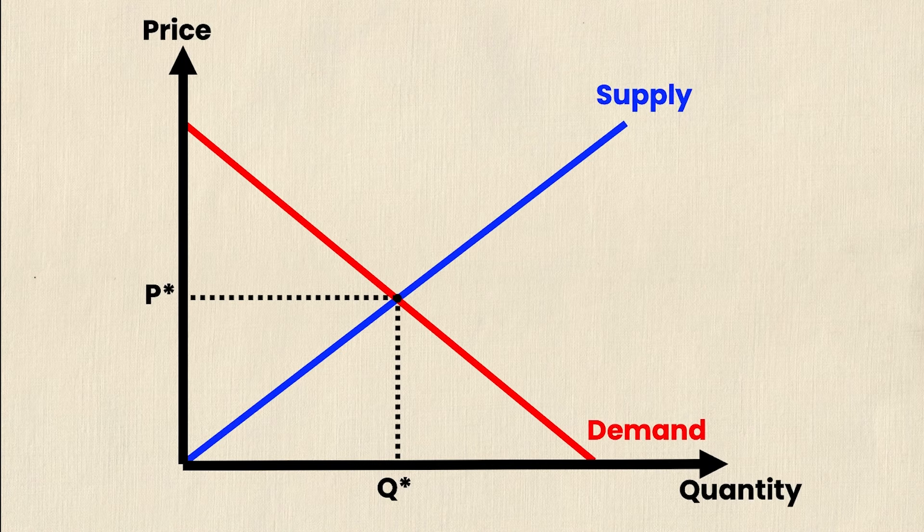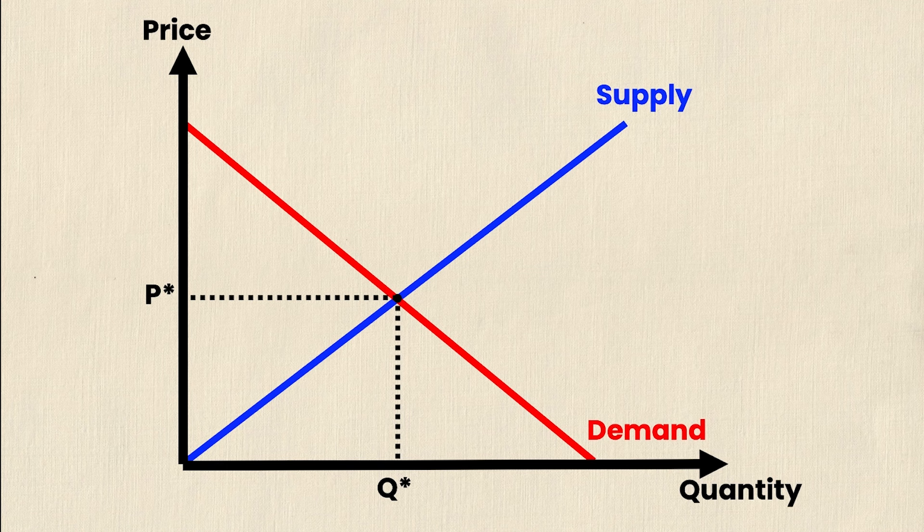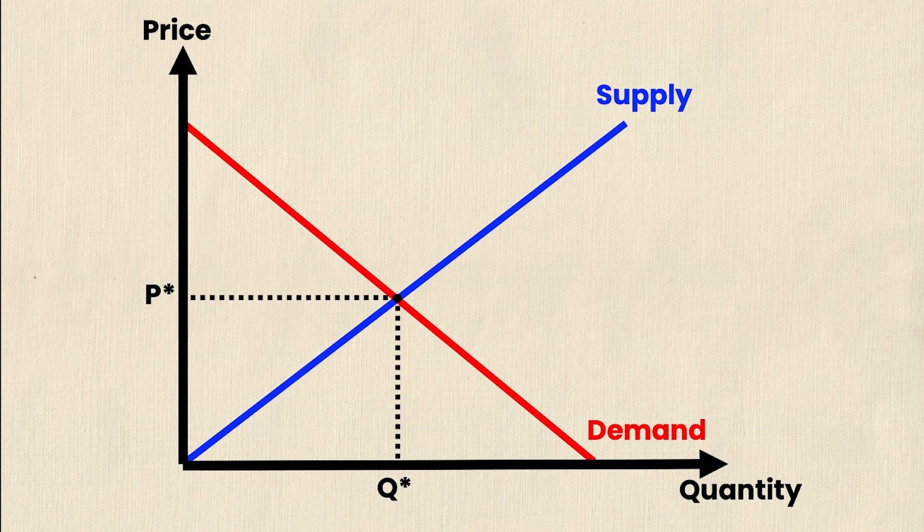So let's start by drawing our general supply and demand graph. We have our axes, supply and demand curves, and then we've labeled everything. Price is on the y-axis, quantity is on the x-axis. Supply is the upward sloping blue line and demand is the downward sloping red line. And we've got our equilibrium labeled at P star and Q star.